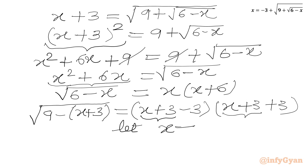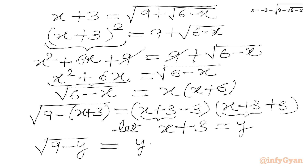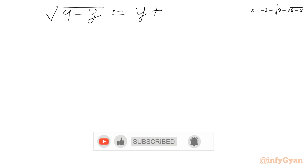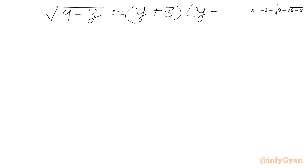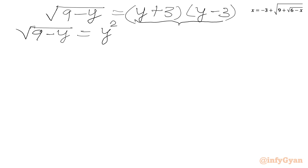Now we use substitution: let x plus 3 equal y. So the equation becomes square root of (9 minus y) equals (y minus 3) times (y plus 3). Applying the difference of two squares formula on the RHS, we get square root of (9 minus y) equals y squared minus 9.